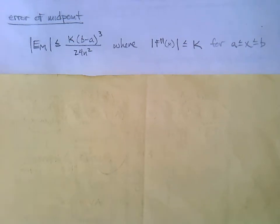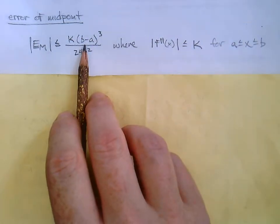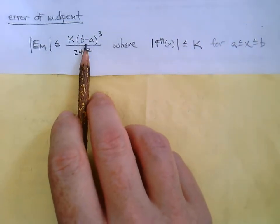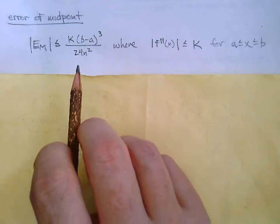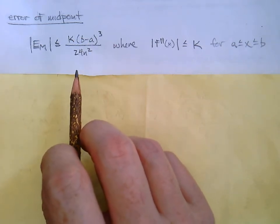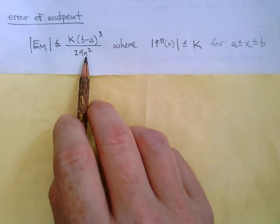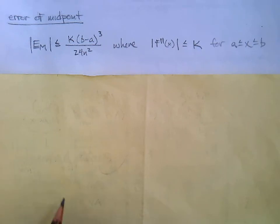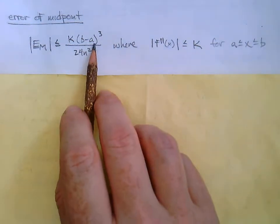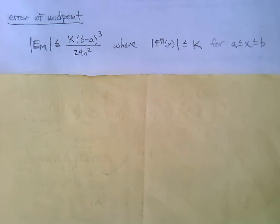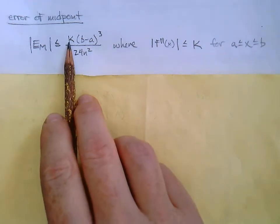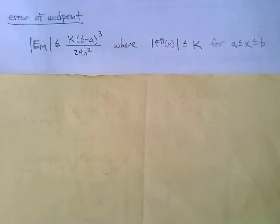The a and b are the limits of integration — we integrate from a to b — and n is the number of subintervals. So we know a, b, and n just from the integral itself. The difficult part is K.